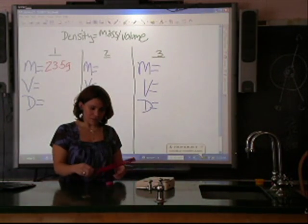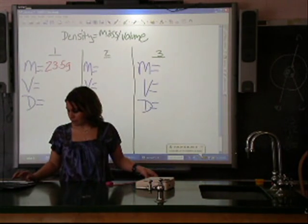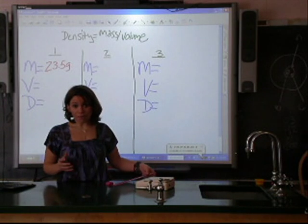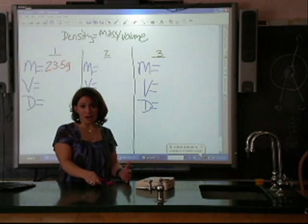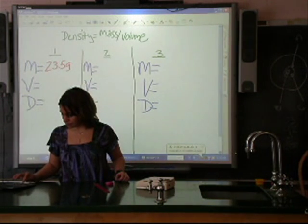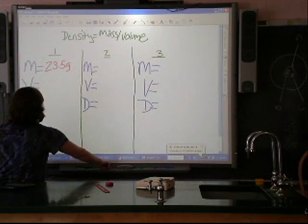I'm going to multiply that by the width, which in this case is right around 3. I'm going to multiply that by the height, which is about 1.4. So my volume for this object is 14.7 centimeters cubed.